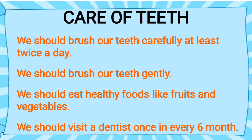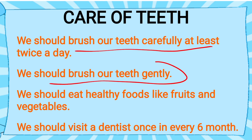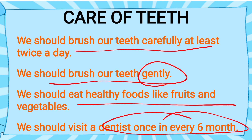Care of teeth: How can we care for our teeth? We can care for our teeth by brushing twice a day. We should brush our teeth gently — never do it harshly. We should eat healthy food like fruits and vegetables. We should also visit a dentist once every 6 months.